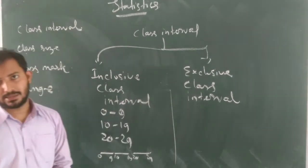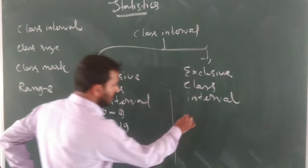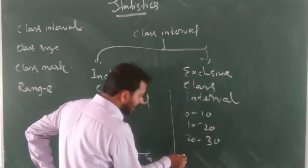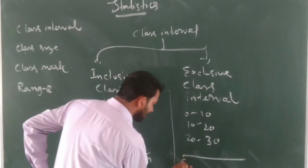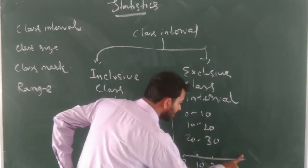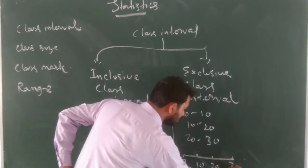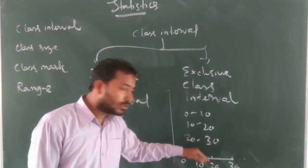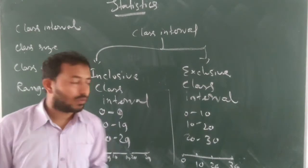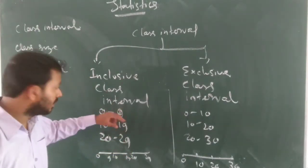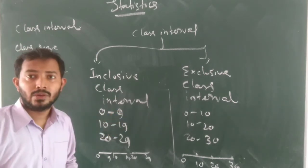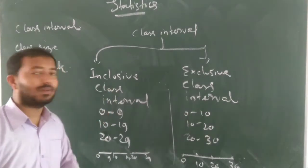For exclusive class interval, if we take 0 to 10, 10 to 20, 20 to 30 — on a line segment you can see there is no gap. That means it is in continuous form. There is a limitation: if any student got 9.5, where will we keep it — in this interval or in this interval? We cannot keep it anywhere. So there is a limitation for inclusive class interval.